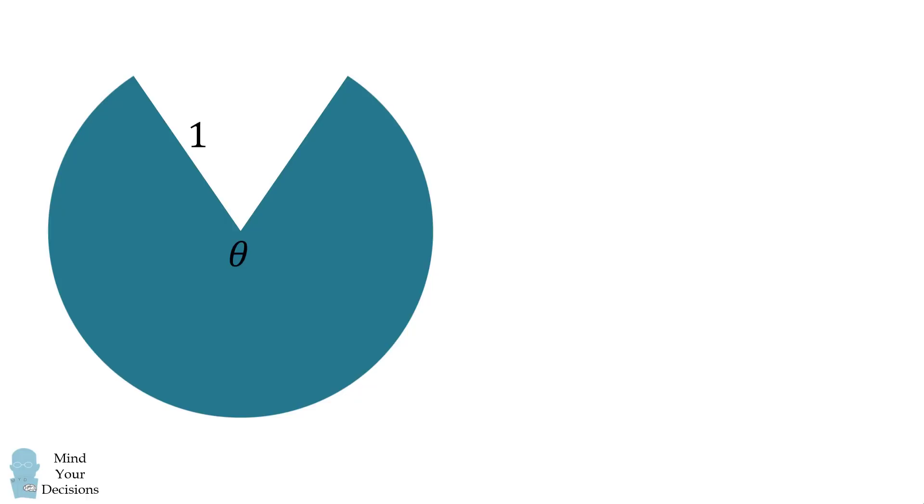The dimensions of the circular sector will determine the size of the cone. The radius of the circular sector will be equal to the slant height of the cone. Since the radius is equal to 1, the slant height is equal to 1. We then have the arc length of the circular sector will be equal to the circumference of the base of the cone. The size of the arc length is equal to its radius multiplied by the central angle. In this case, we have 1 multiplied by theta, which will be equal to theta. Therefore, the circumference of the base of the cone will also be equal to theta.